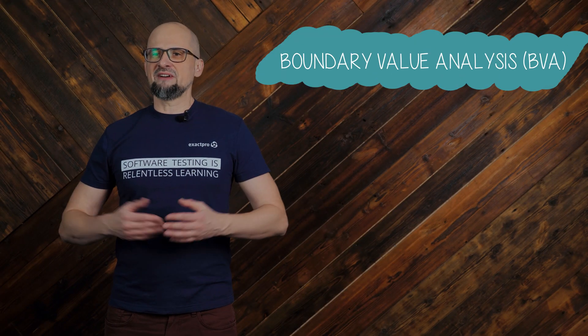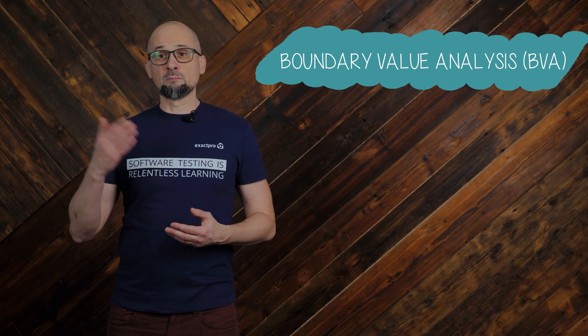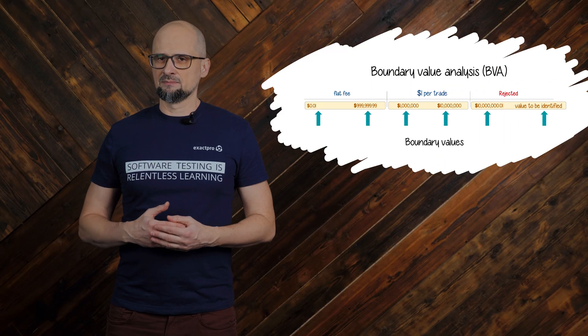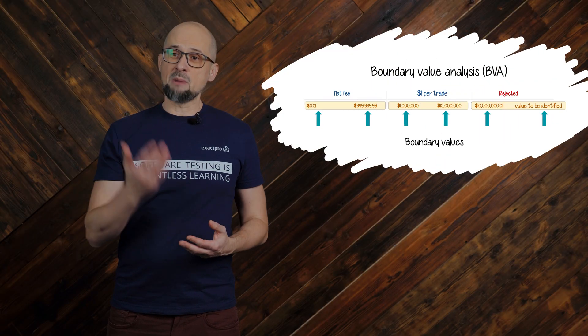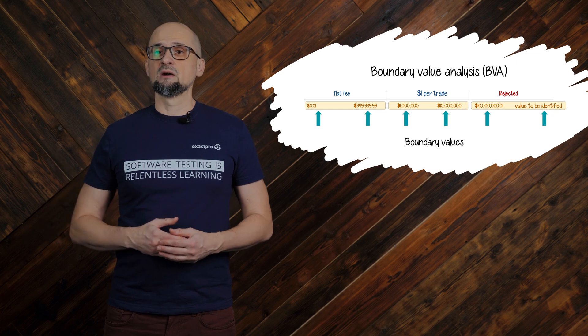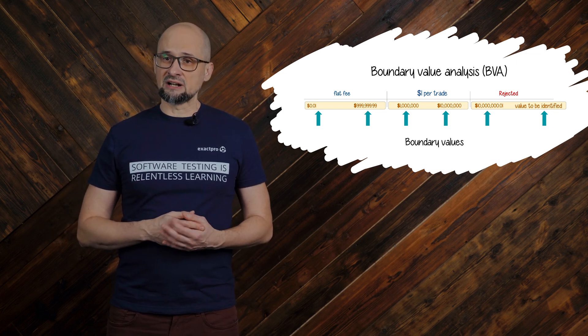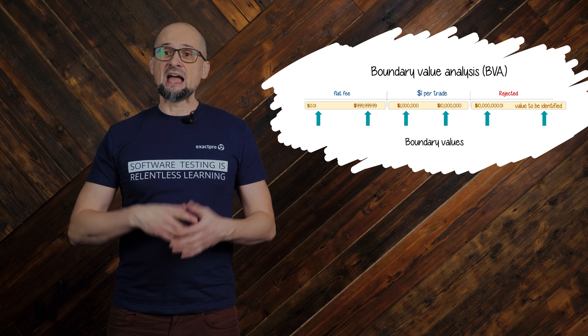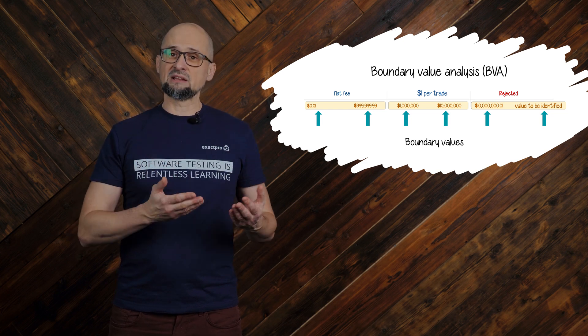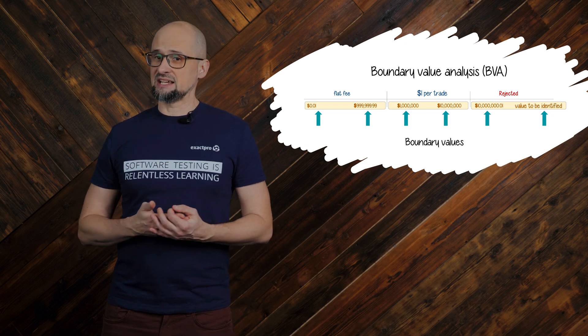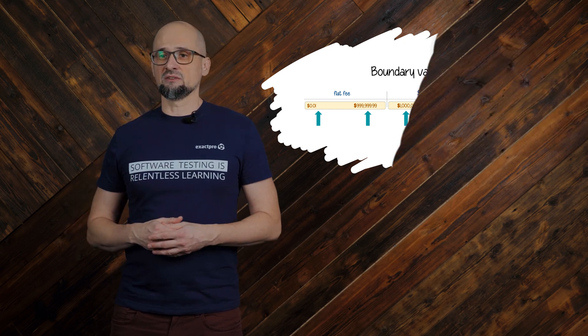Number 2: Boundary value analysis, or BVA, is an extension of equivalence partitioning. The minimum and the maximum values of a partition are its boundaries. Using our previous example, we need to determine that our boundaries are set correctly. We test the first partition by checking the 0 dollar and 1 million dollar values, and the second partition with the 1 million dollar plus 1 cent value and the 10 million dollar value.